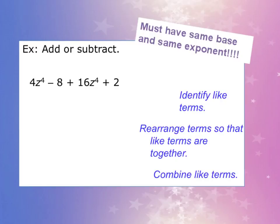Let's go ahead and identify our like terms. We have 4z^4, so a like term will have the same variable and the same exponent, and here we have 16z^4. For -8, it's just going to be another constant or another number that goes with that, and that would be positive 2.